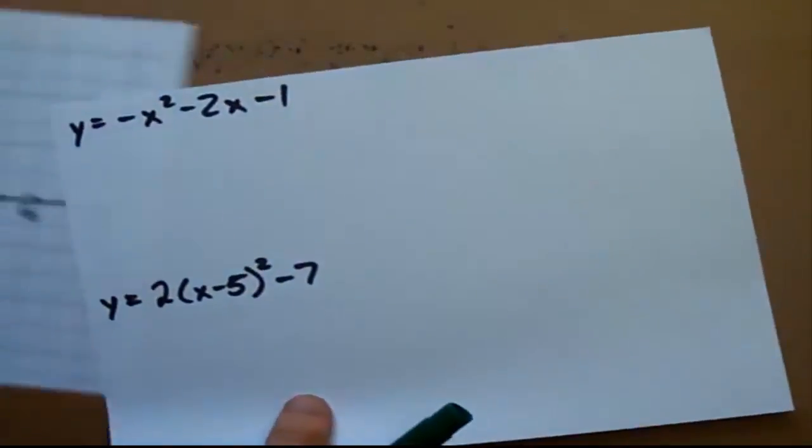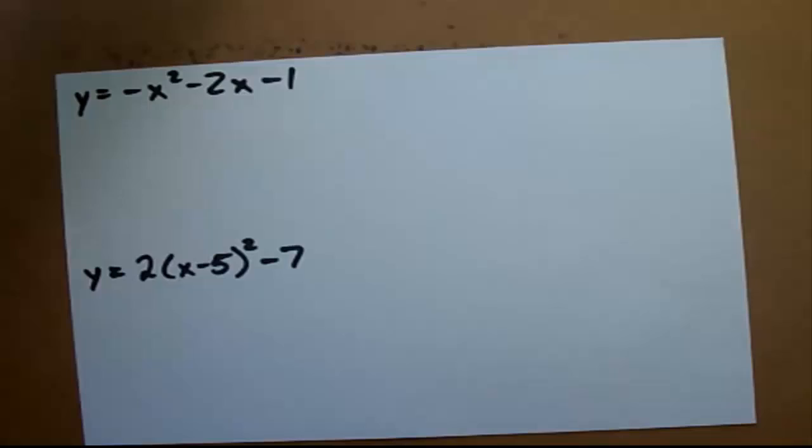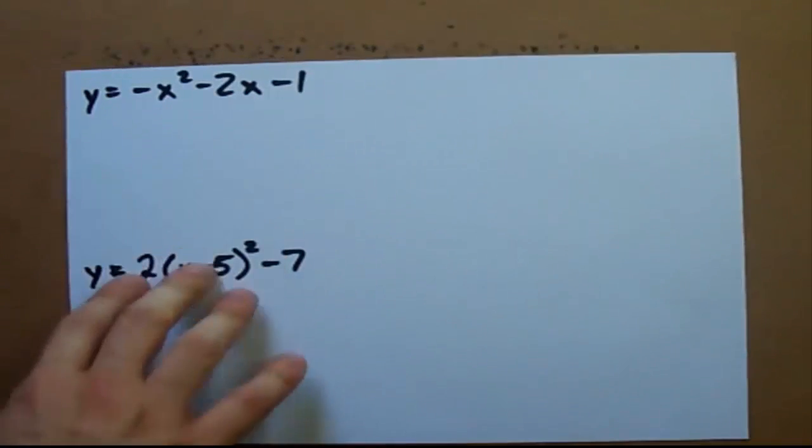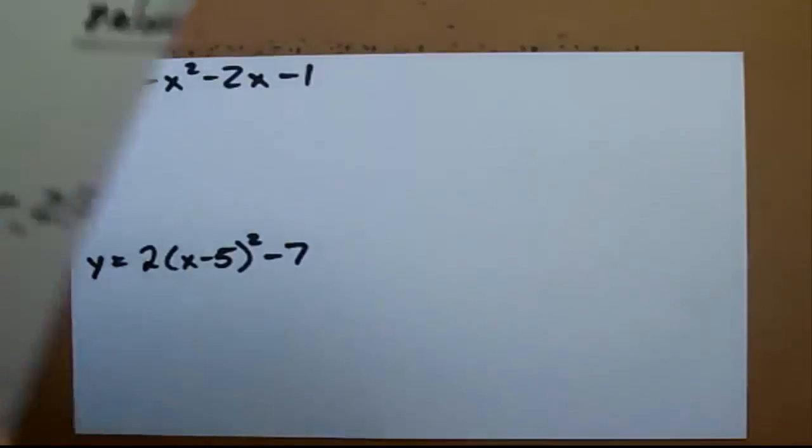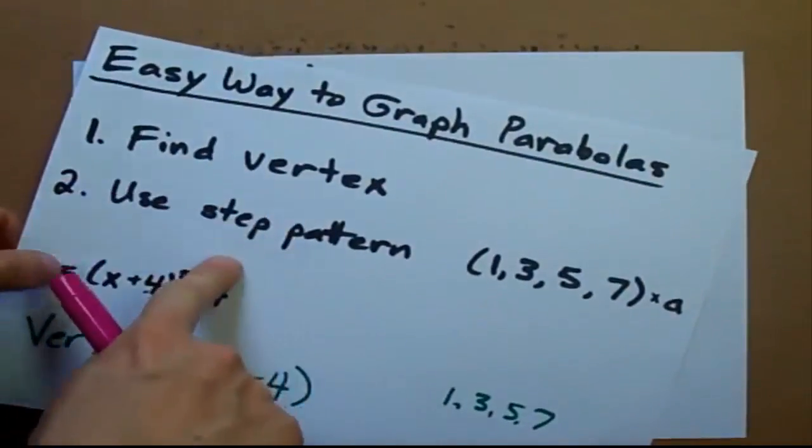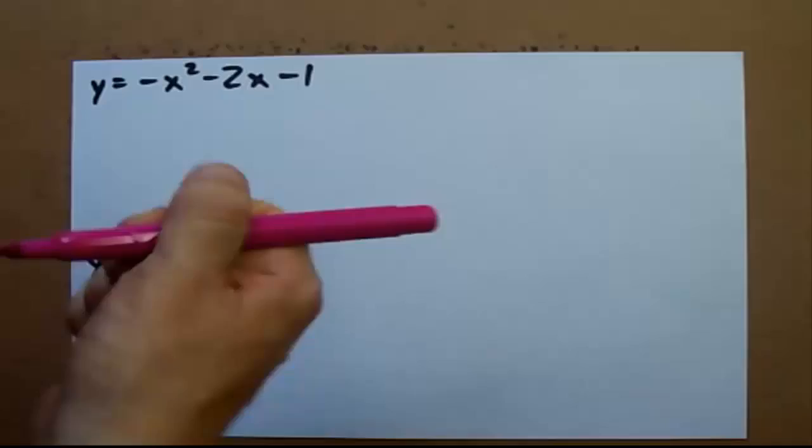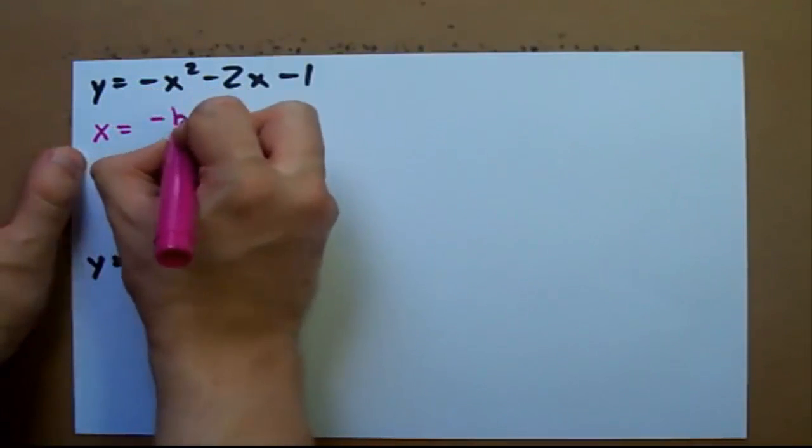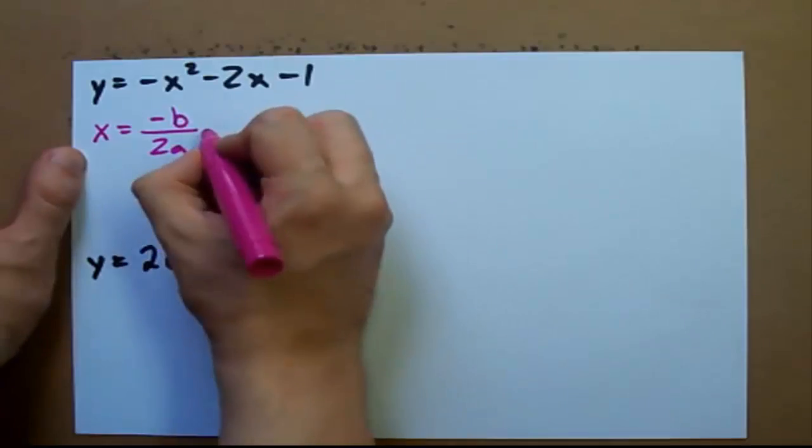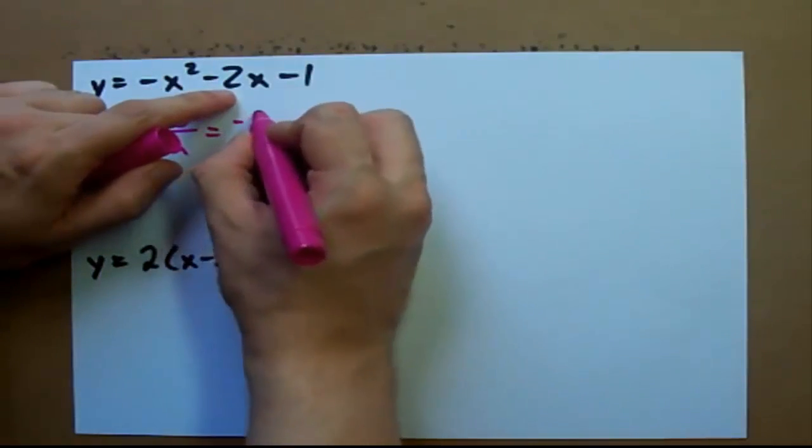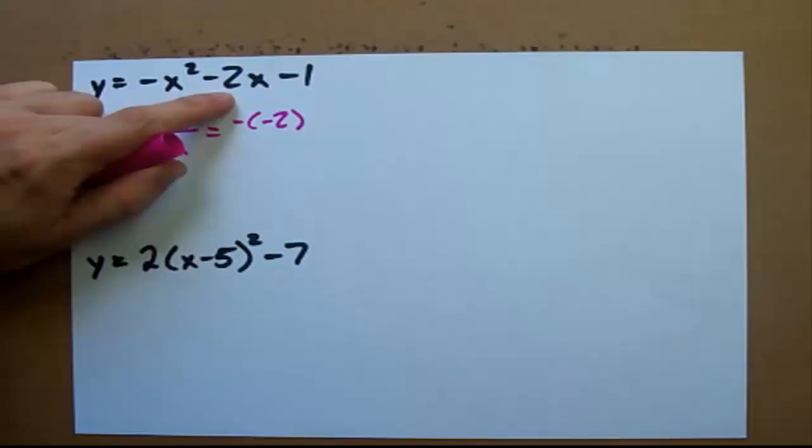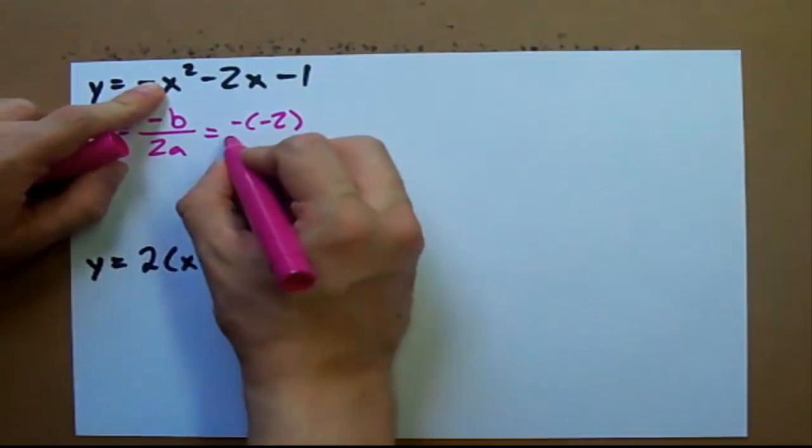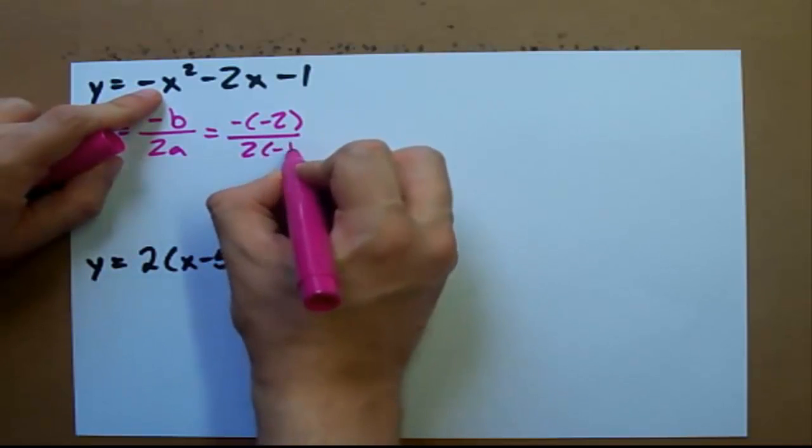You could be asked to graph slightly more complicated things like negative x squared minus 2x minus 1. Again, all you have to do is find the vertex then use the step pattern. Now my way to find the vertex is to use negative b over 2a, which in this case is negative negative 2, this is b in front of your x, over 2 times a. a here is negative 1.